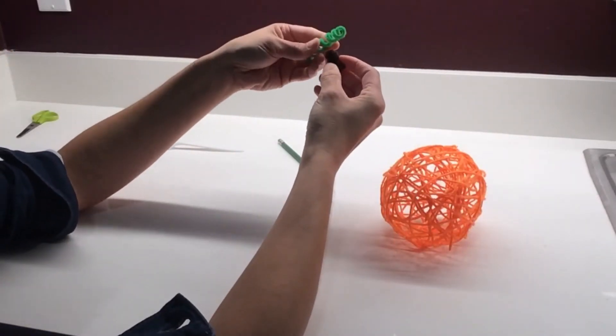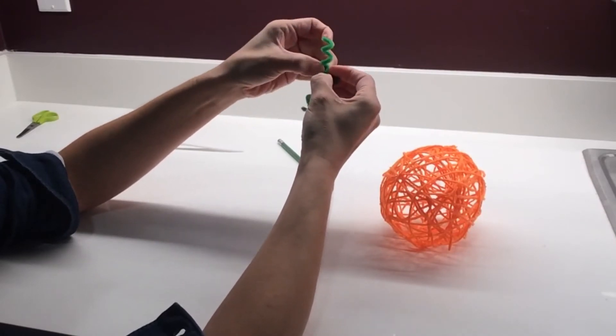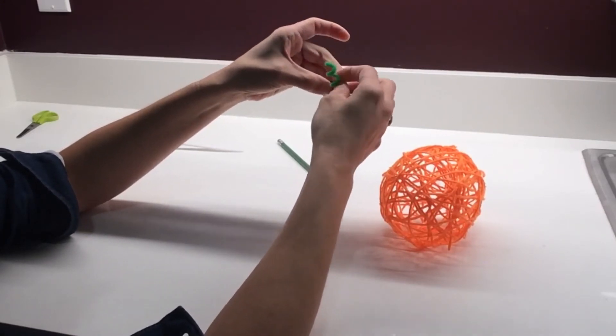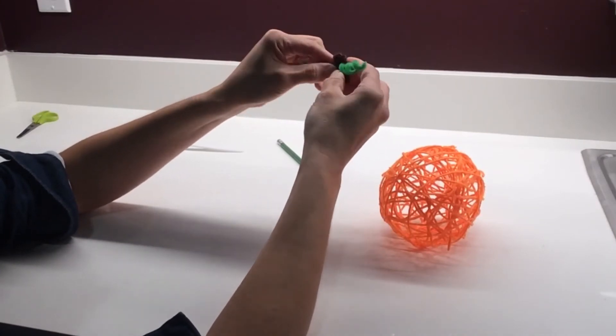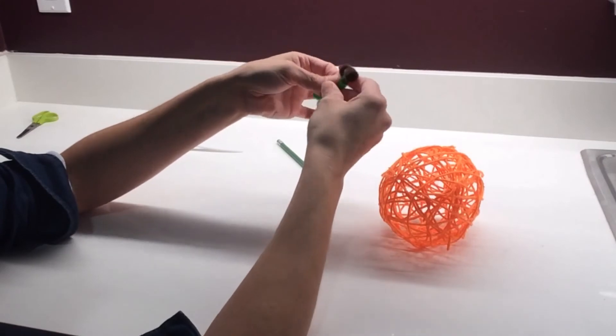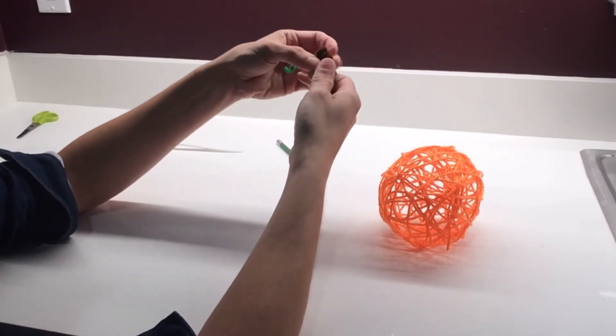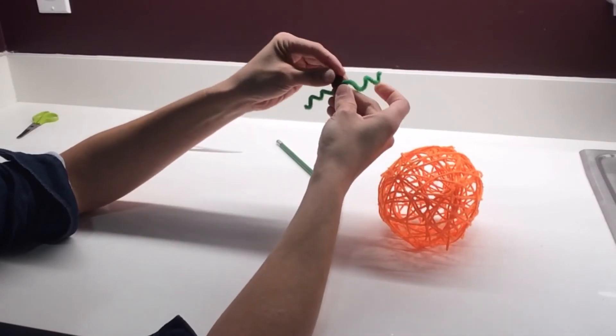Now you're going to put these two together by wiggling the green pipe cleaner into one of the coils of the brown pipe cleaner. And you can twist it around to secure it. And now it's ready to be added to the pumpkin.